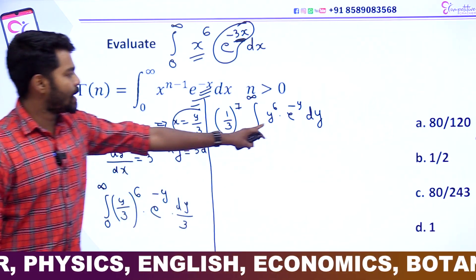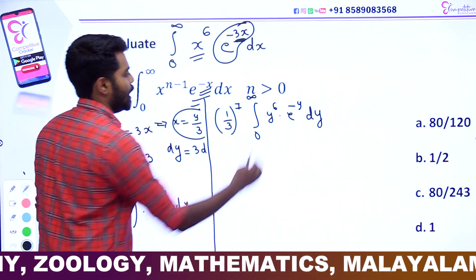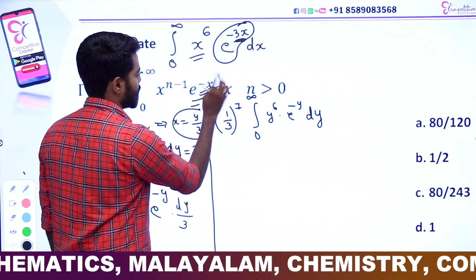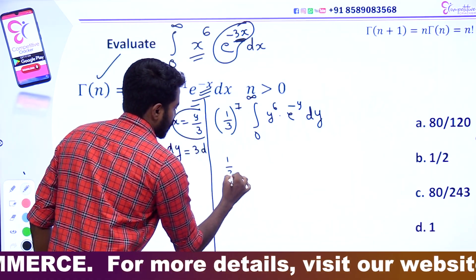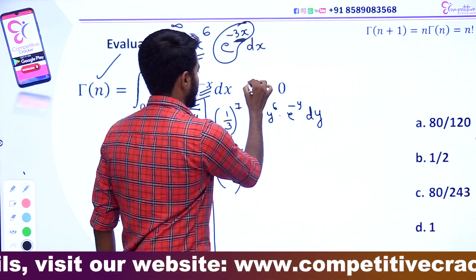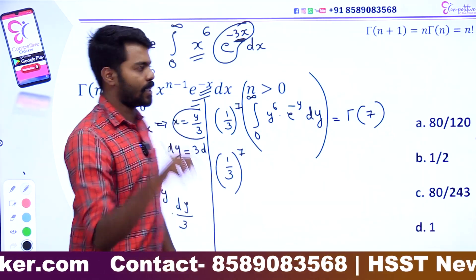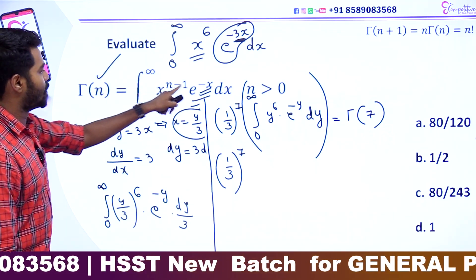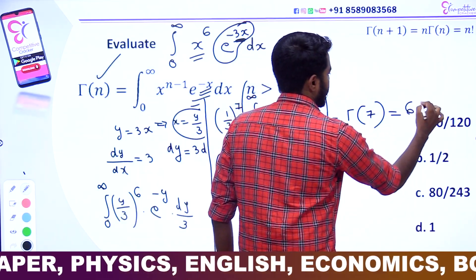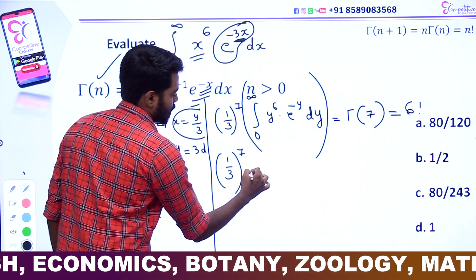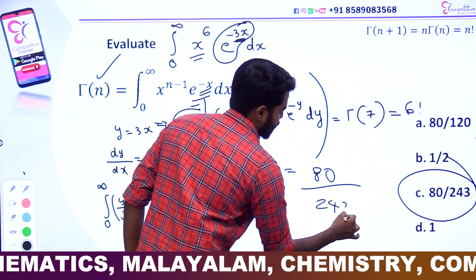Here we have 3 raise to 6, then x raise to corresponding elements. This is the power minus y, minus variable. This is correct. This is what we call this. We apply this equation. That is what we call a constant. 1 by 3 raise to 7. Now, what do we call this? This is equal to gamma of 7. We call it 7 minus 1, which is gamma of n. 7 minus 1 is gamma of 7. That is 6 factorial. The answer is 1 by 3 whole raise to 7 into 6 factorial. This is why we call it a special function.